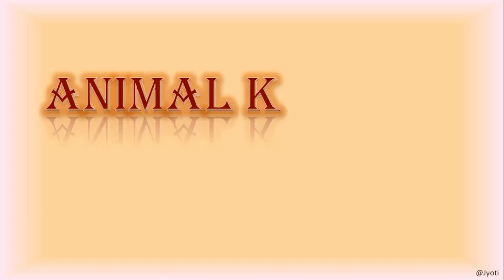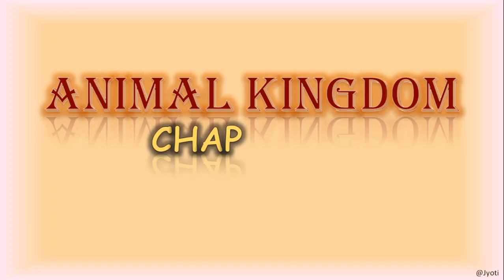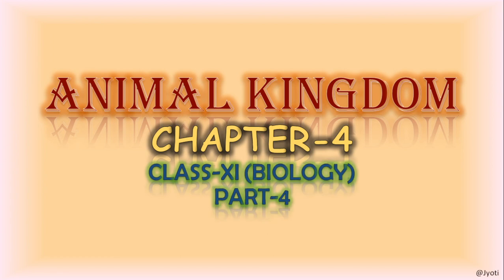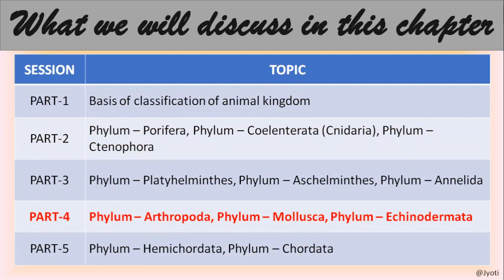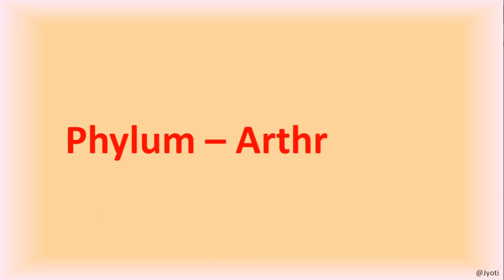Welcome everybody. We are discussing chapter 4 of class 11th Biology - Animal Kingdom. In our previous three sessions, we discussed up to Phylum Platyhelminthes, Phylum Aschelminthes or Nemathelminthe, and Phylum Annelida. Today in this session, we will discuss Phylum Arthropoda, Phylum Mollusca, and Phylum Echinodermata. Let us start with Phylum Arthropoda.